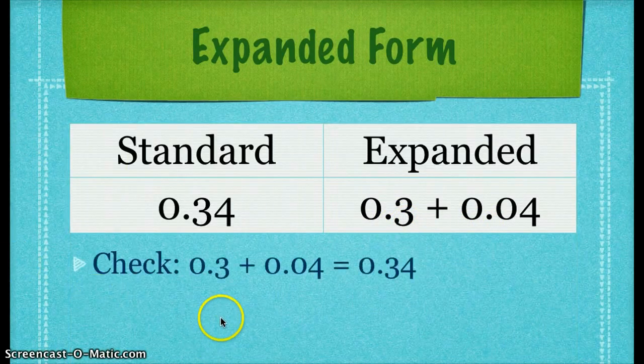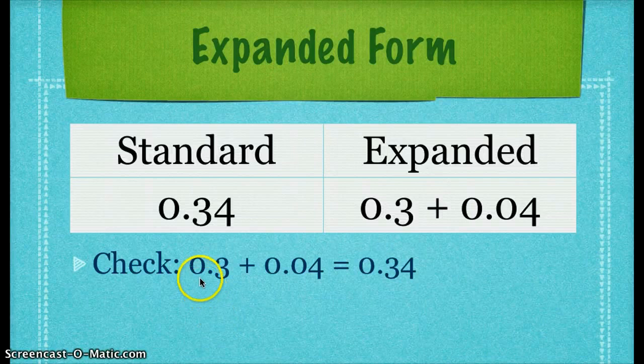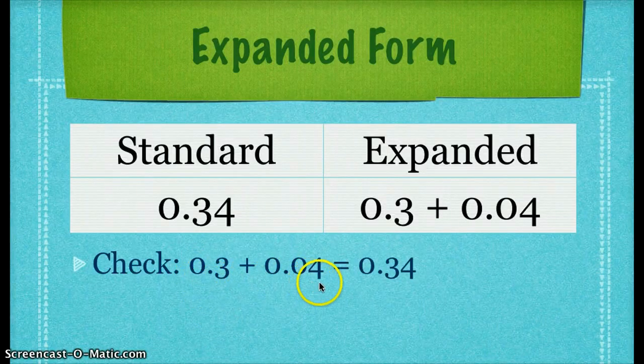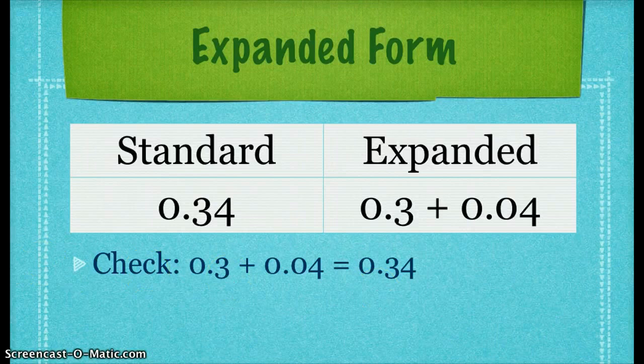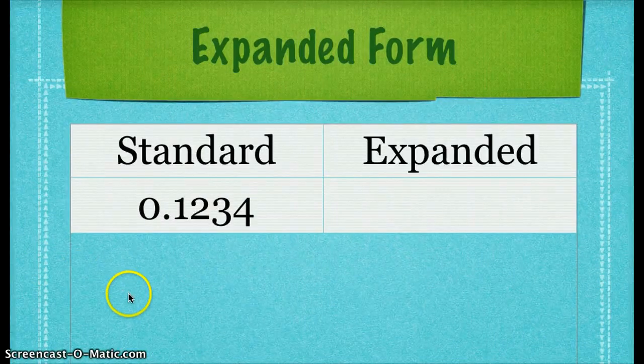You can check on your calculator, or by hand, that 0 and 3 tenths plus 0 and 4 one hundredths equals our original decimal 0 and 34 hundredths. These are two forms of the exact same number. Let's try another one.